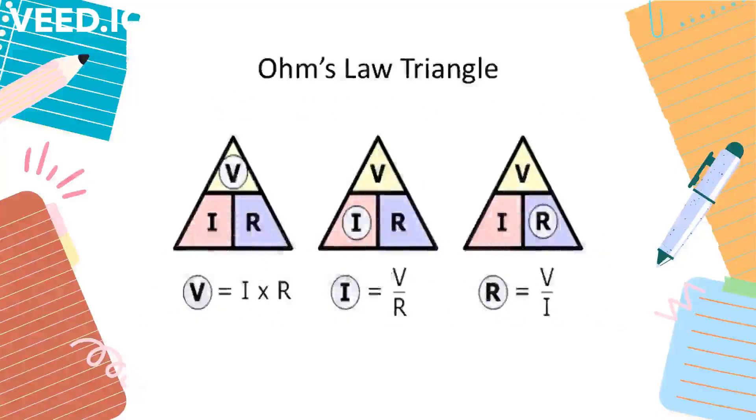Using the Ohm's law triangle, we can easily memorize the following equations. To look for voltage, I times R. To look for current, V divided by R. To look for resistance, V divided by I.